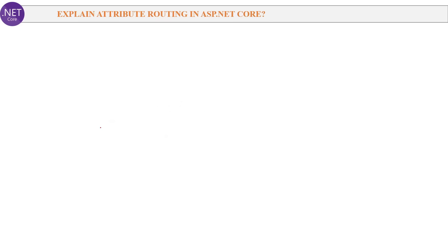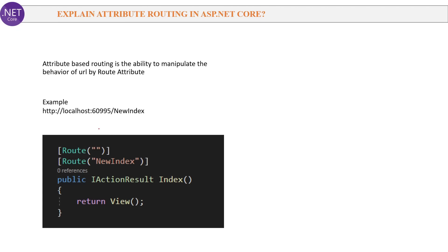Next question: Explain attribute routing in ASP.NET Core. Attribute-based routing is the ability to manipulate the behavior of a URL using the Route attribute. For example, if you want to redirect the user to the Index method when they type 'new-index' in the URL, you use the Route attribute and set the behavior accordingly. When the URL is 'new-index', it checks the Route attribute value and redirects to the Index method.